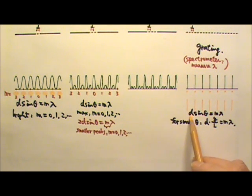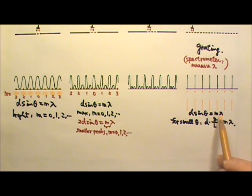For grating, we have D sine theta equals M lambda. And when M equals 0, 1, 2, 3, we get the 0th order, 1st order, 2nd order, maxima.